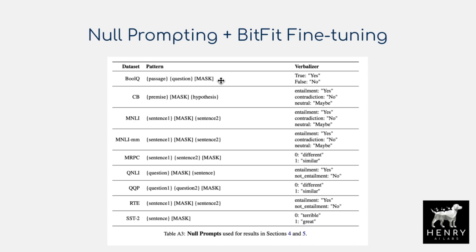In null prompting, you don't have any prompt template — just a mask at the end of the inputs — and then you have a verbalizer. This is the key idea: null prompting uses these simple prompts with BitFit fine-tuning, where you only update the bias term in WX+B throughout the transformer, in order to fine-tune the model for transfer learning. You don't need to spend effort on prompt search — the big takeaway is that even these simple null prompts work well when paired with the verbalizer.